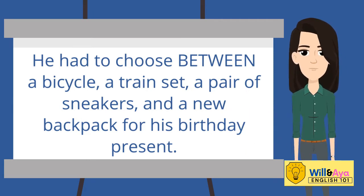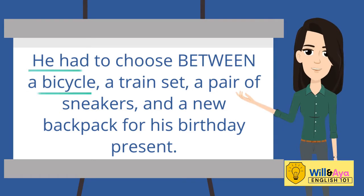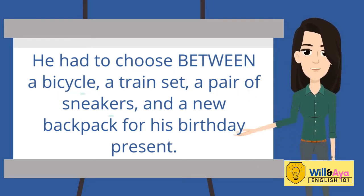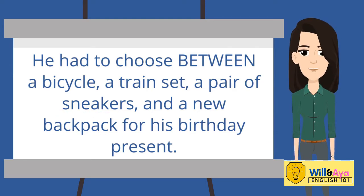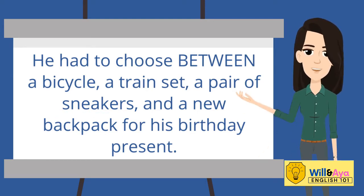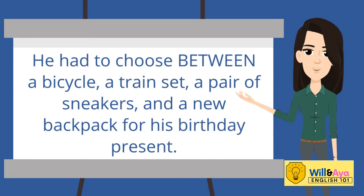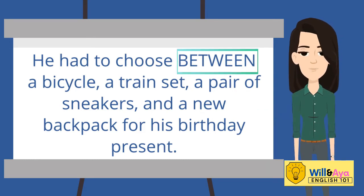Here, we have four distinct elements: bicycle, train set, a pair of sneakers, and a new backpack. Since the elements are separate and identifiable, we can use the word 'between'.